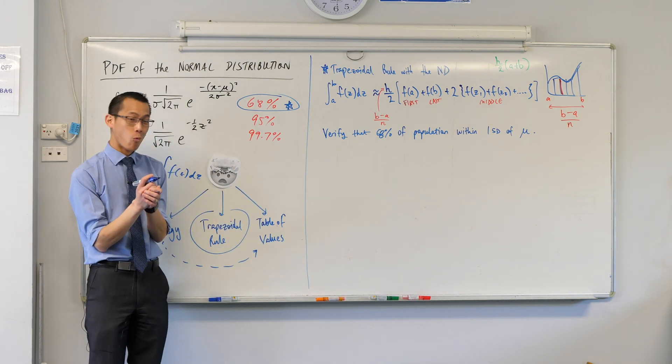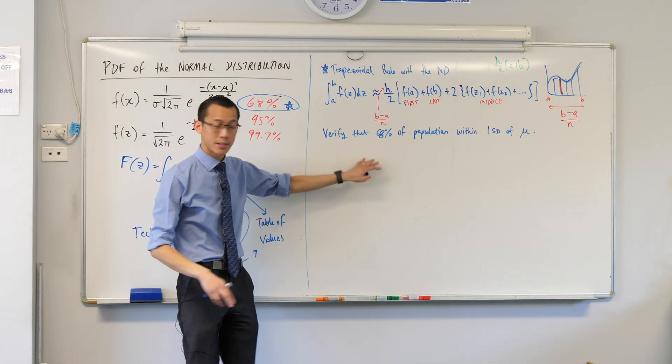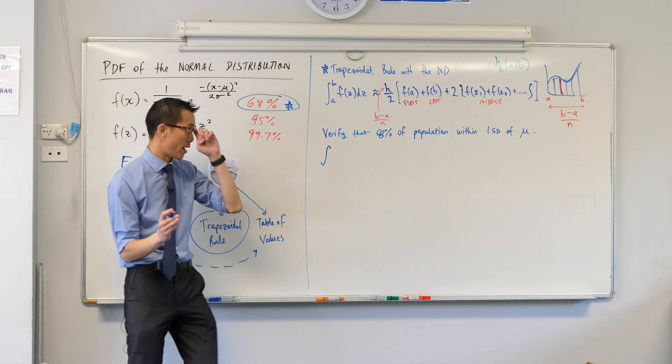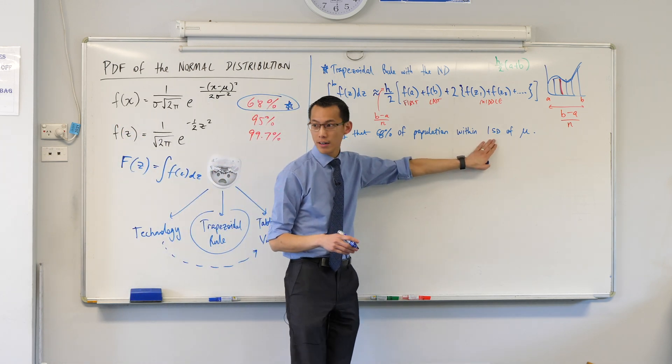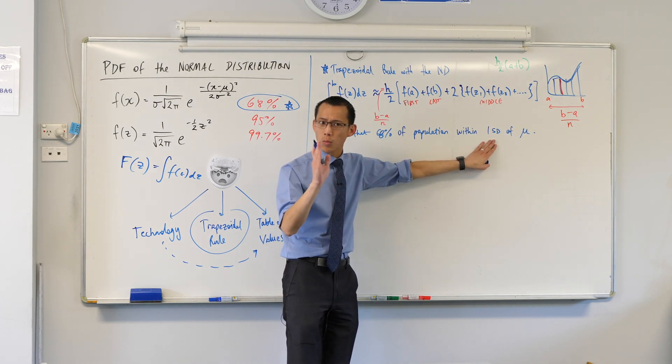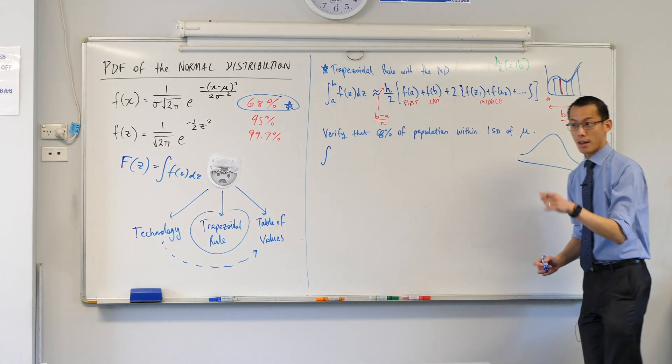Okay, so what would be the integral that should, if we get it right, give us 68%? I'm going to need to start somewhere and end somewhere. So where do I start if I'm within one standard deviation of the mean? Let's draw ourselves a little normal distribution here, right? Minus one to one.